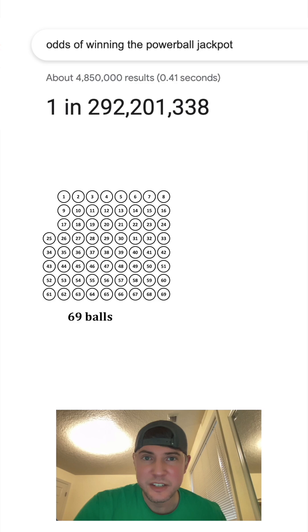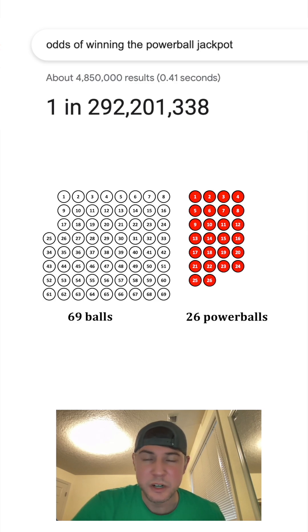So when doing the Powerball lottery, you have 69 balls and then you have 26 Powerballs. You choose 5 balls out of the 69 and then you choose 1 out of the 26. The only way you win the jackpot is if you get them all correct.